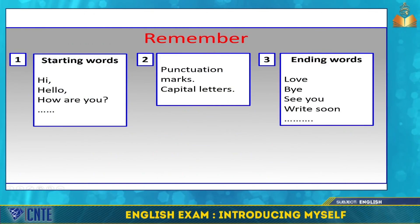Now, for the second writing task — writing a postcard or an email — keep in mind the following steps. First, use starting words like hi, hello, how are you? Second, use punctuation marks and capital letters at the beginning of each sentence. Third, use ending words like love, bye, see you, write soon.